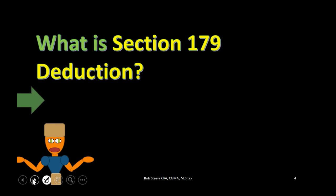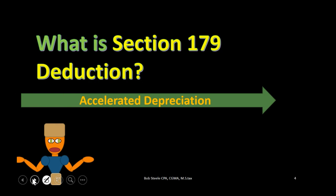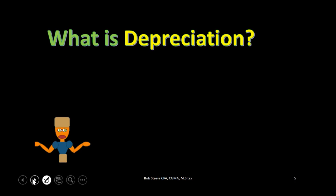So what is a section 179 deduction? It's basically going to be an accelerated depreciation in which you get full depreciation in year one — the first year of purchase. In order to understand that more fully, we first need to know what depreciation is, what fixed assets are, and what's the difference between having it all in year one versus spreading it out.